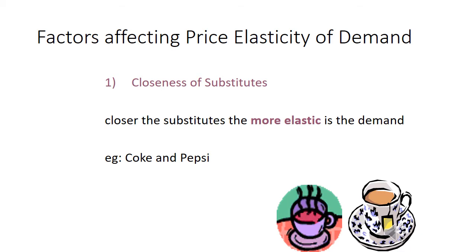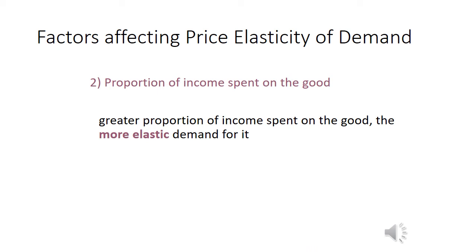The second factor that affects price elasticity is the proportion of income spent on the good. The greater the proportion of income spent on the good, the more elastic the demand will be. On the other hand, when you spend a very little proportion of your income on that good, you become very inelastic because you don't really care since it takes up so little of your income. So the greater the proportion of your income spent on a good, the more elastic you become.